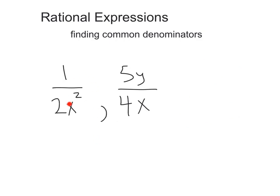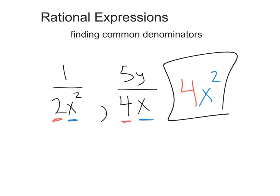Let's turn the heat up a bit: one over two x squared and five y over four x. Looking at our denominators, first let's take the numbers two and four — the least common multiple is going to be four. Moving on to our variables, we've got x squared and x. If we multiply x by another x, that gives us x squared, so both terms can go into x squared. That's part of our least common multiple, giving us a common denominator of four x squared.